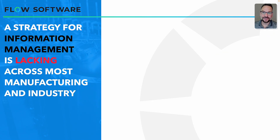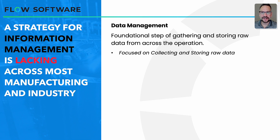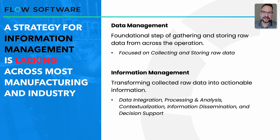Information management strategies are severely lacking across industry and manufacturing. For the last 30 years, manufacturers have focused heavily on data management — that is, collecting and storing raw data across their operations — but they've neglected information management: transforming that raw data into actionable insights and usable information. It's more than just storing data; it's bringing multiple data stores together, adding context, adding process events, analyzing that data, and then distributing that information for decision support.